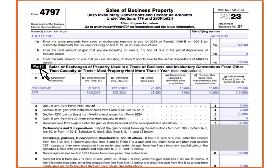Going into more detail on losses — we're actually talking about sales of business properties, which could be a loss or a gain. On line 2, you have the description, date acquired, date sold, gross sale price, depreciation allowed or allowable since acquisition, and the cost or other basis plus improvements. The gain or capital loss in this case is $25,000.